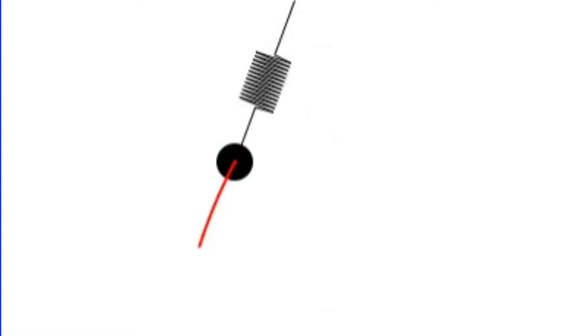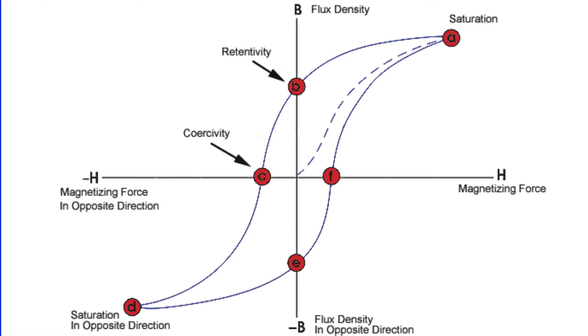Picture this like pushing and pulling on a spring. The force applied doesn't directly translate to the movement of the spring. Similarly, the magnetic flux in the core doesn't precisely follow the magnetizing force. This lag creates a loop of energy that isn't fully recoverable, manifesting as hysteresis loss.